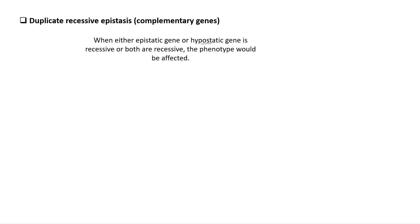We already learned about recessive epistasis, which means when the epistatic gene is in a recessive state, and dominant epistasis when the epistatic gene is in a dominant state — these are the conditions when the phenotype of the hypostatic gene is affected. Duplicate recessive means when either the epistatic or hypostatic gene is recessive, or when both are recessive, the phenotype gets affected.